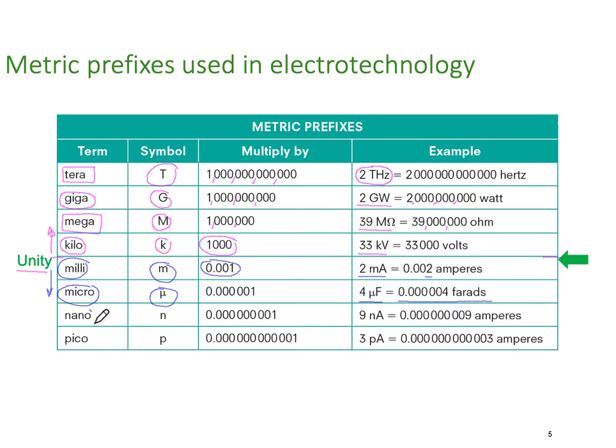And we come down to nano, uses lowercase n, and that's times 10 to the minus nine. We might be talking nine nano amps or 0.000009 amperes. You can see how boring that would get after a while. It's much easier to say nine nano amps.